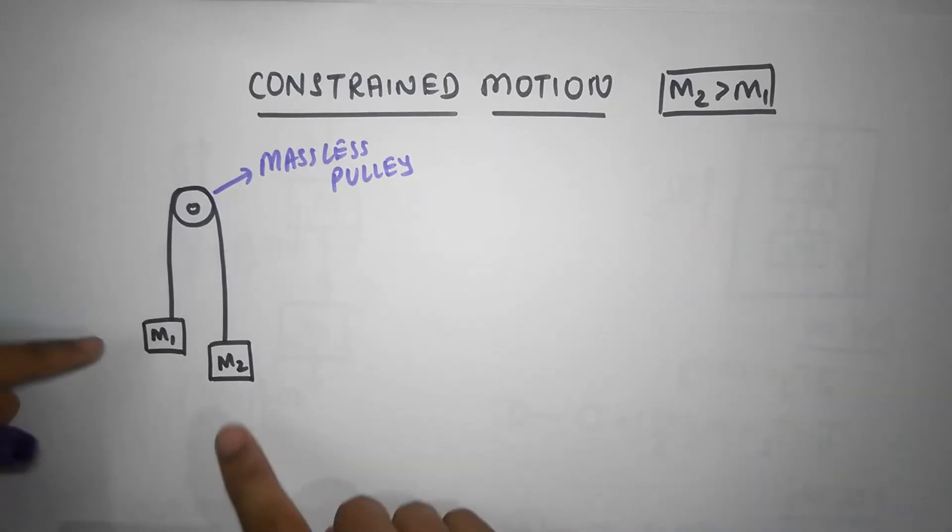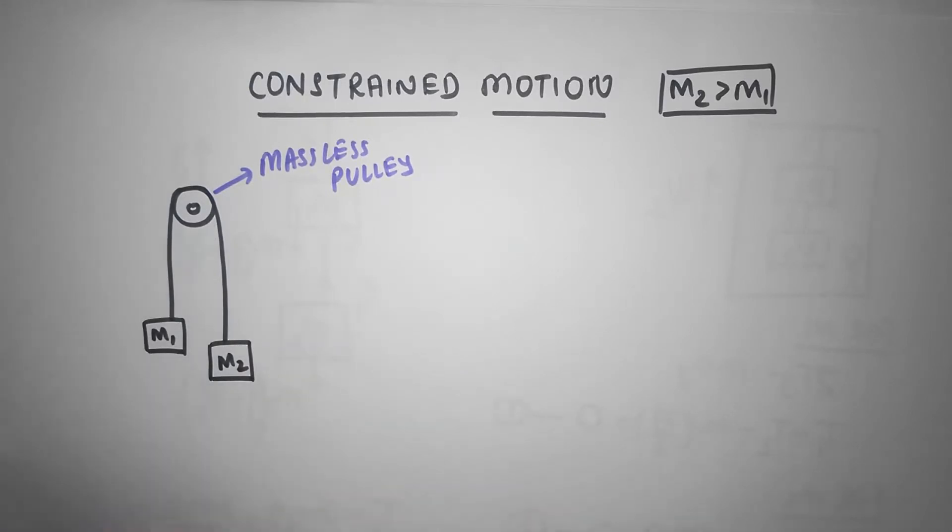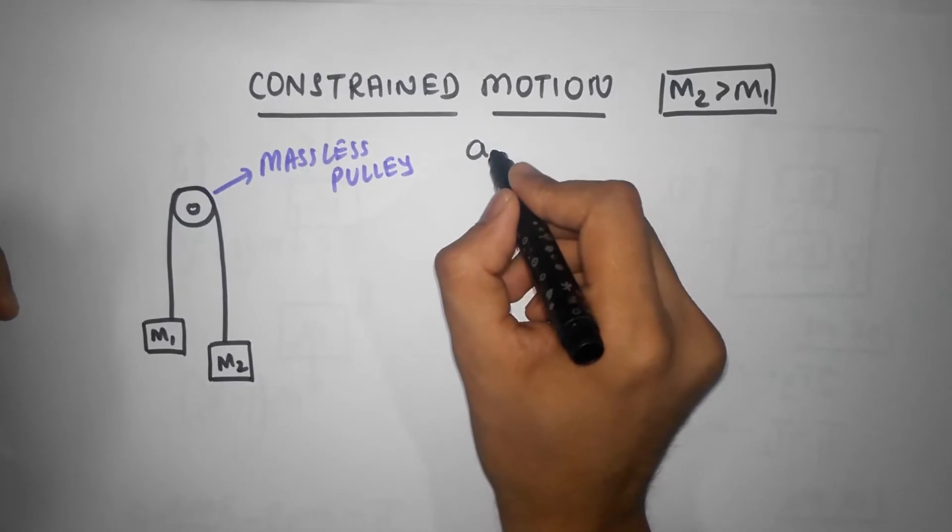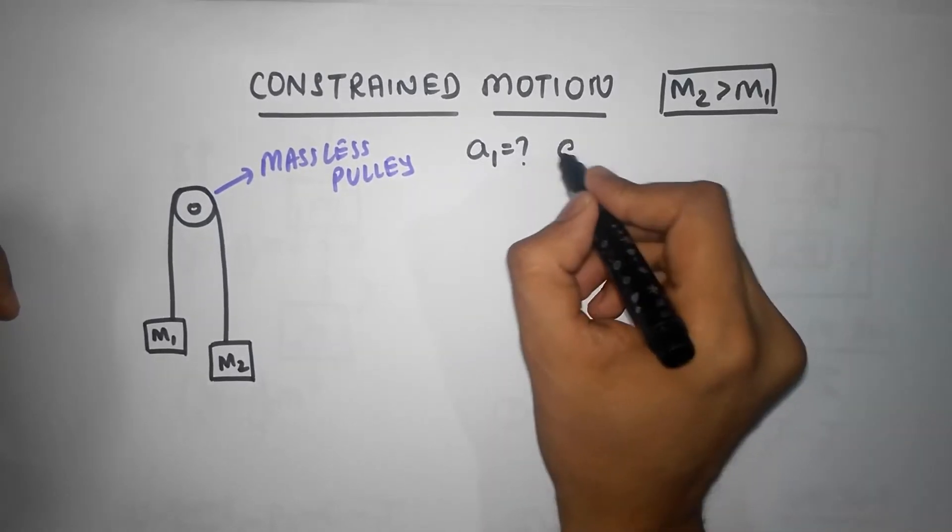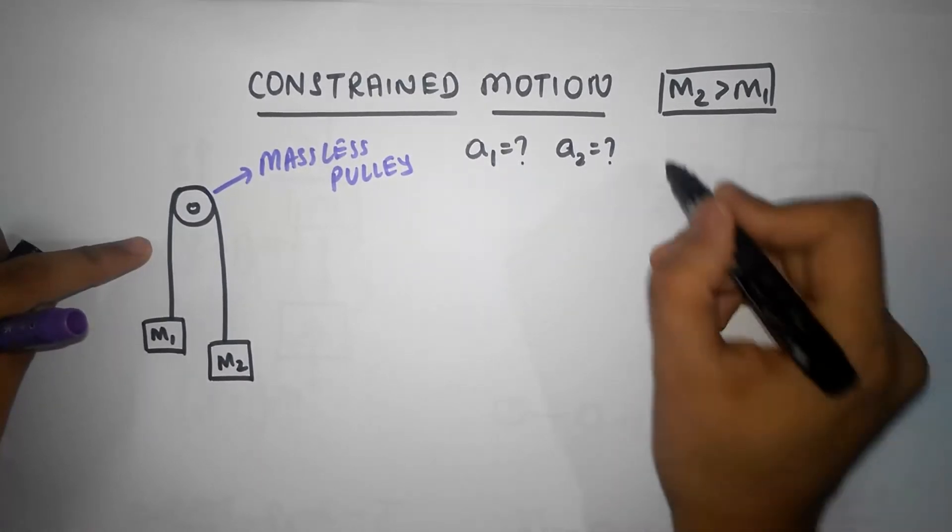Well, it's quite intuitive to understand M2 is going to accelerate down and M1 is going to accelerate up, but I want to calculate the acceleration. So I want to know what the acceleration of each block is, what's the acceleration of the first block, what's the acceleration of the second block, and I also want to know what's the tension in the string.